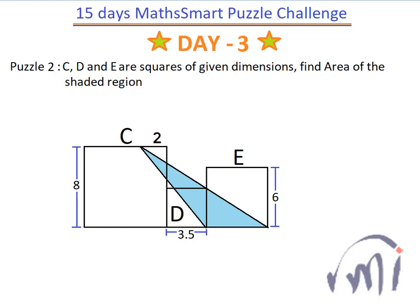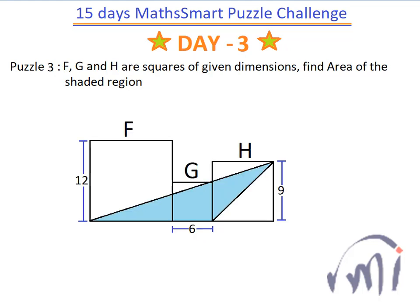And then we have one more puzzle — the third puzzle. Here also we have to find the area of the shaded region, where F, G, and H are squares of the given dimensions. Try solving these puzzles.